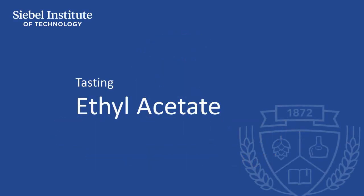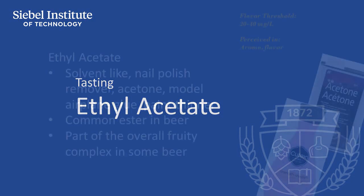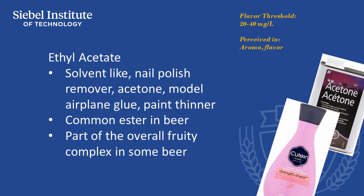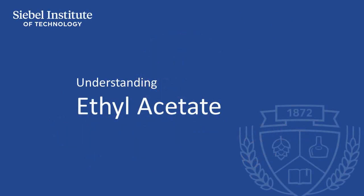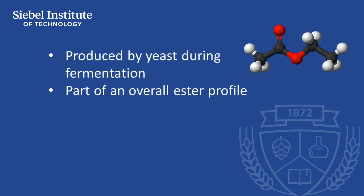Ethyl acetate is one of the more common esters in beer, with the most common descriptors referring to solvents and glues. However, it usually forms part of the overall complex of fruity aromas found in beer when it's at low concentrations. Ethyl acetate is an ester produced by yeast during fermentation, and it's usually found in low concentrations as part of an overall ester profile that gives beer fruity characteristics.